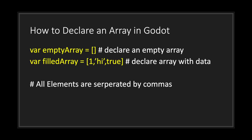Declaring an array in Godot is fairly straightforward. You declare a variable as you would any other variable, but when you assign it a value you use square brackets. To declare an empty array you just use square brackets with nothing inside. If you want an array with predetermined values, simply type them out. Keep in mind that all elements must be separated by commas, and in GDScript your arrays can have different data types.